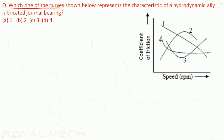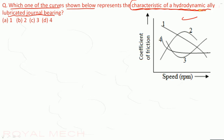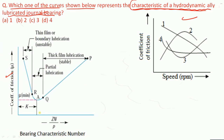Which of the curves represents the characteristics of a hydrodynamically lubricated journal bearing? From the coefficient of friction versus bearing characteristics curve, curve number 3 represents the characteristics of a hydrodynamically lubricated journal bearing. Therefore option C — curve number 3 — is the correct option.